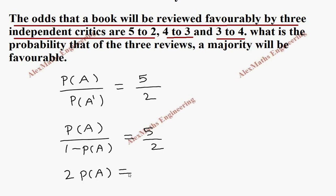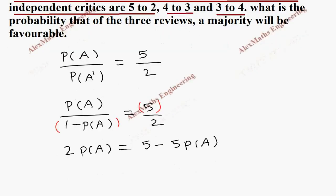We can cross multiply, so 2 times P(A) equals 5 minus 5 P(A). This term we can take to the other side: it becomes 7 P(A) equal to 5, and P(A) is 5 by 7.